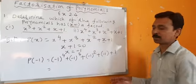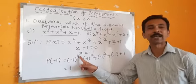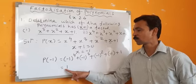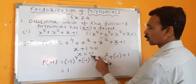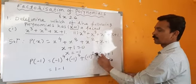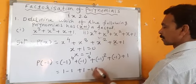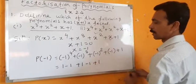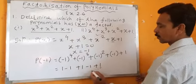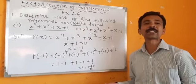Minus 1 raised to 4 is 1 because if the term in brackets is negative and the power is even, the answer is always positive. Minus 1 cubed is minus 1. Minus 1 squared is 1. So we get: 1 minus 1 plus 1 minus 1 plus 1, which equals 1. The answer is not 0, so the answer is no.